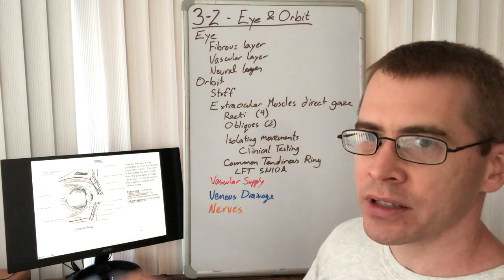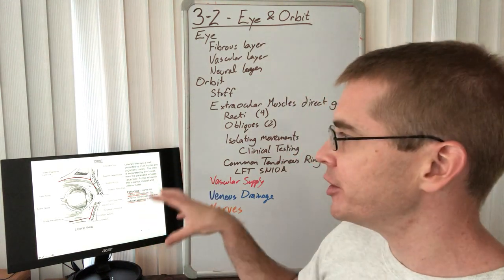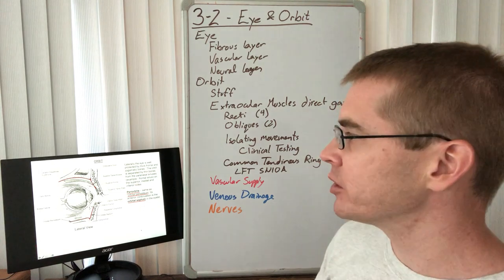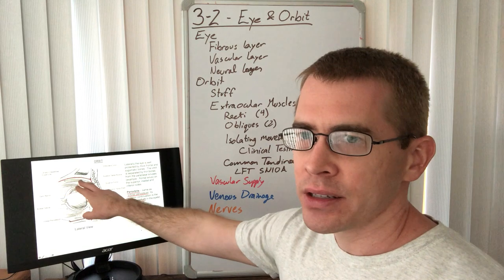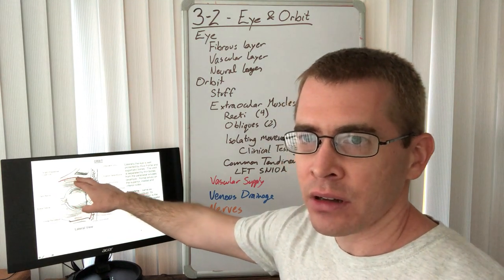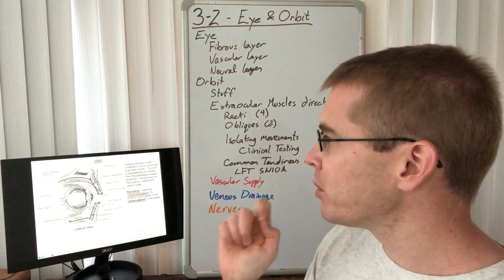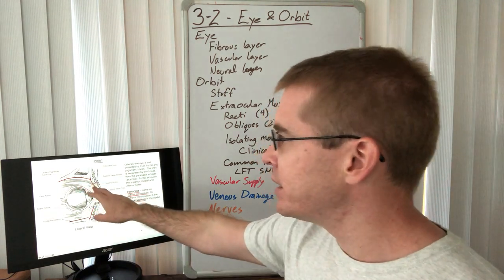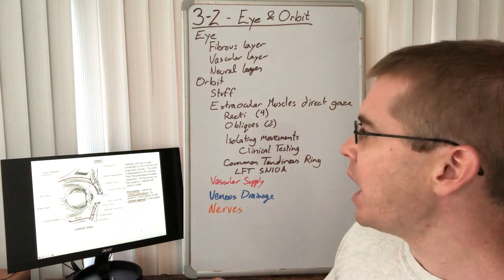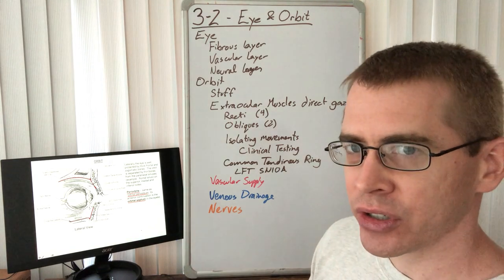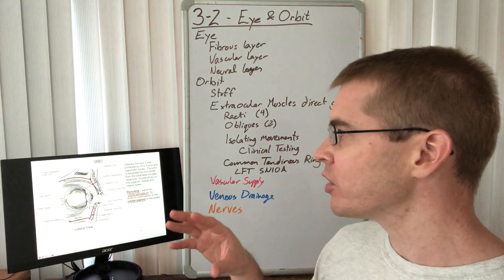Now let's look at the connective tissue contents of the orbit — the fat, the fascia — before getting into the musculature. The orbital periosteum is the connective tissue lining the bones of the orbit. It extends anteriorly onto the eyelids, and when it does, it loses the periosteum name and is instead called periorbita.